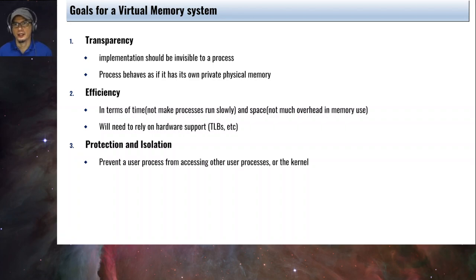And lastly, for protection and isolation, meaning a process should not be able to access the memory of other processes. There should be a violation. So usually when you have a segmentation fault, for example, it is the operating system responding that it kills your process because it's trying to access memory area that it is not supposed to access.